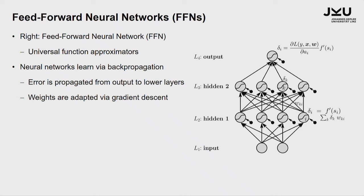Feedforward neural networks are, so to say, the vanilla standard setup. You have an input layer, then some hidden layers, and an output. It is known since Kurt Hornik's work in 1990 that feedforward neural nets are universal function approximators. So even one hidden layer that is arbitrarily wide is enough that such a feedforward neural network, or a multilayer perceptron, is enough to approximate any function you wish in principle.